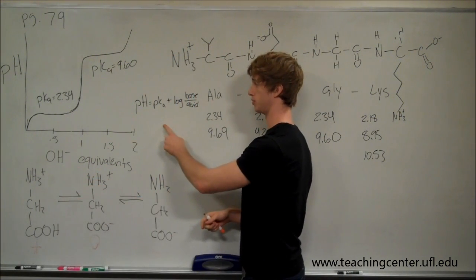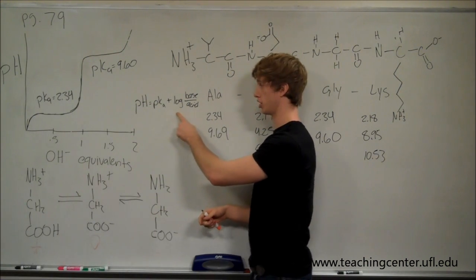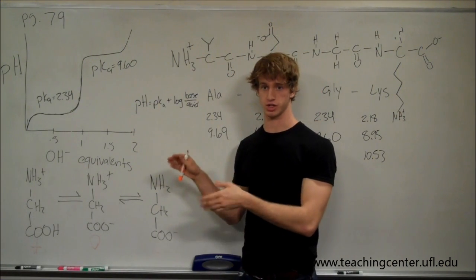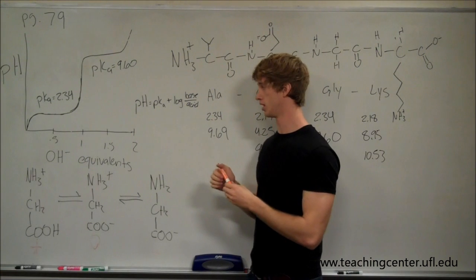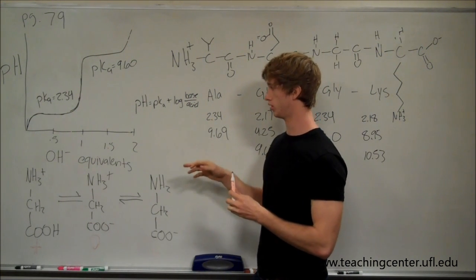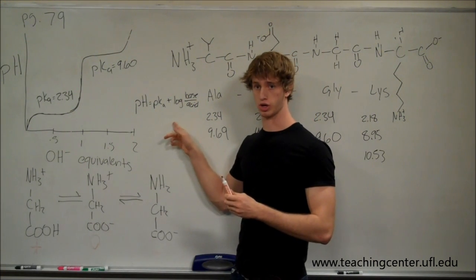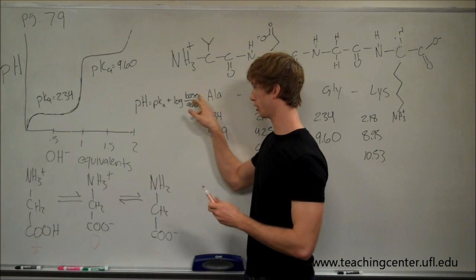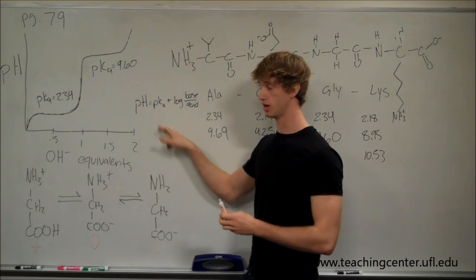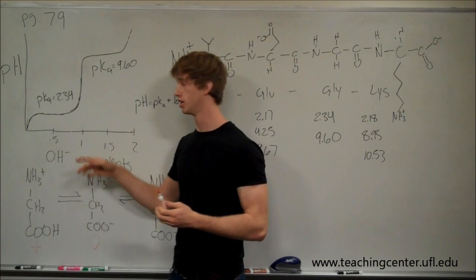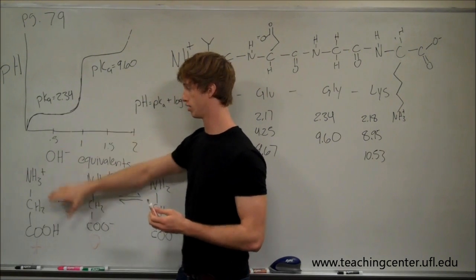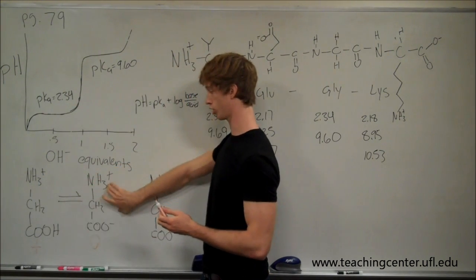If you go to the Henderson-Hasselbalch equation, you see pH is equal to pKa plus log of the ratio of concentrations base to acid. A little math note: log of one is zero. So we have an equal amount of base, equal amount of acid, the pH is equal to pKa. So when the pH is equal to the pKa here, equal amount of acid, equal amount of base.